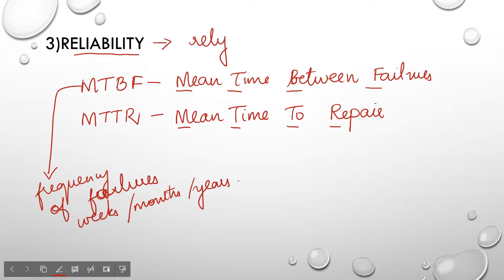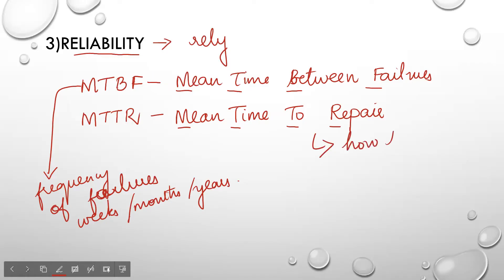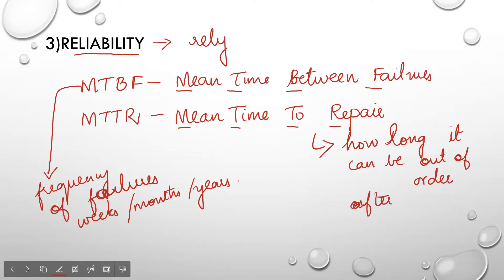The next is MTTR — mean time to repair. It defines how long the system can be out of order after a failure. For a critical system like a flight, after failure you should fix it immediately, so MTTR should be very small. For a non-critical system like an entertainment system, MTTR can be a little longer because it is not going to cause any catastrophic effect.